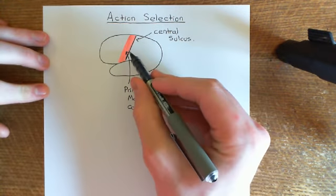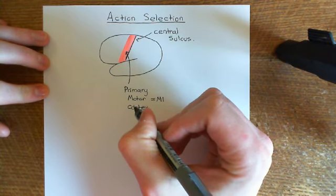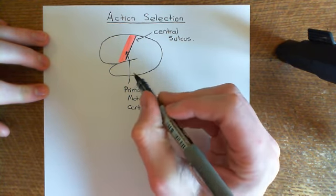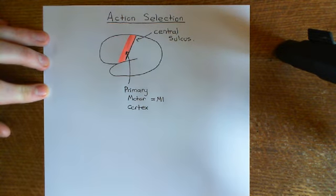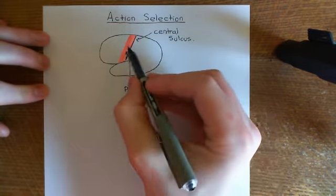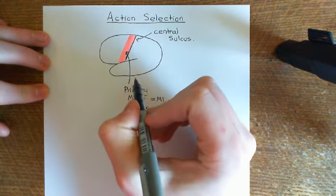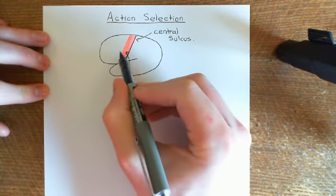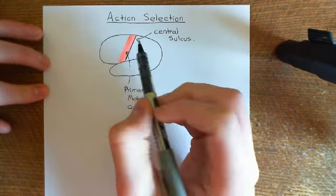M1 is the area that sends neurons all the way down into the spinal cord. These neurons will then tell the motor neurons — which have their cell bodies in the spinal cord — what to do. They'll tell them to fire action potentials, and those motor neurons will then synapse onto skeletal muscle fibers. Basically, this is a relay station which can send information down into the spinal cord.